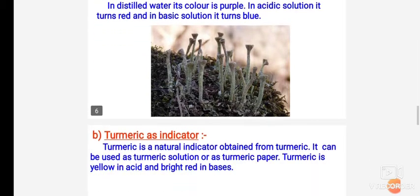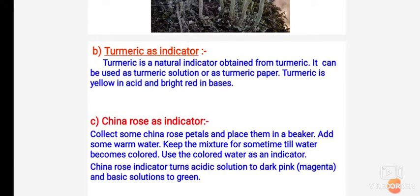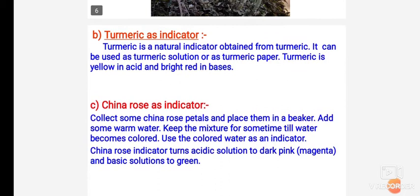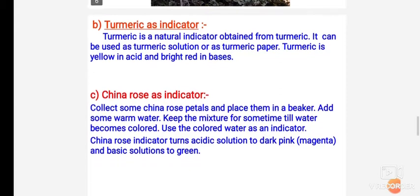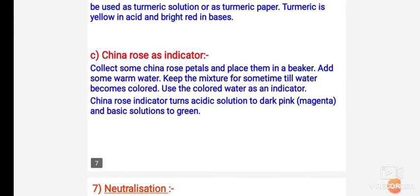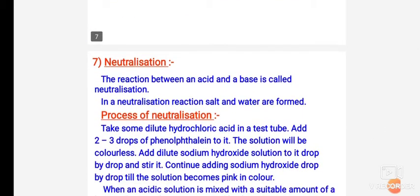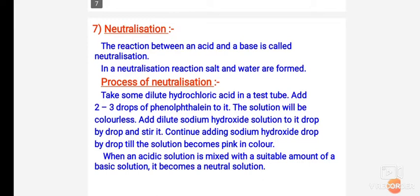Turmeric is also a natural indicator. It can be used as turmeric solution. Turmeric is yellow in acid and bright red in bases. The third natural indicator we discussed was china rose. You have to write about all three natural indicators.